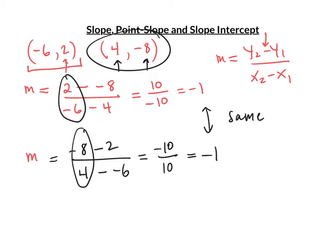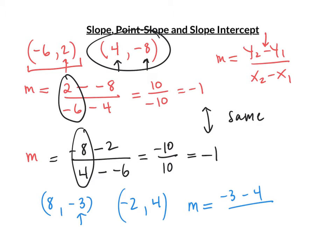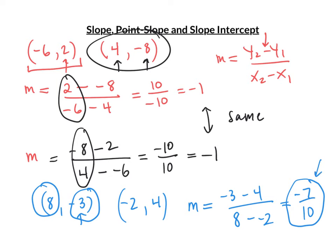One last example: find the slope of the points (8, −3) and (−2, 4). Subtracting the y's up top: negative three minus four is negative seven. Starting with negative three, I must start with eight below: eight minus negative two is eight plus two, which is ten. The slope is negative seven over ten. This fraction does not simplify. Remember, your fractions must have no common factors above and below — if both are divisible by two, divide by two; if by three, divide by three.